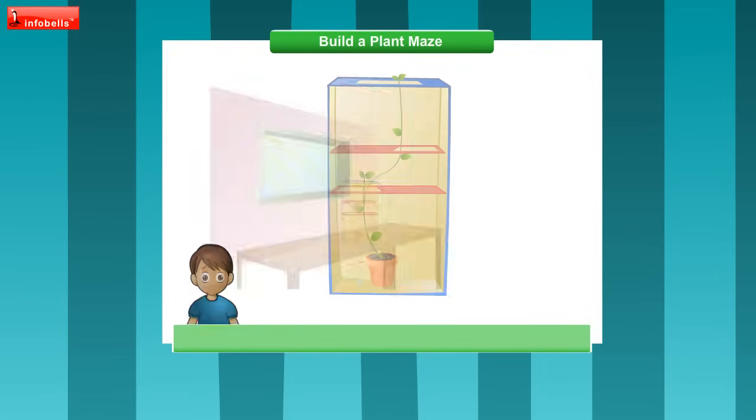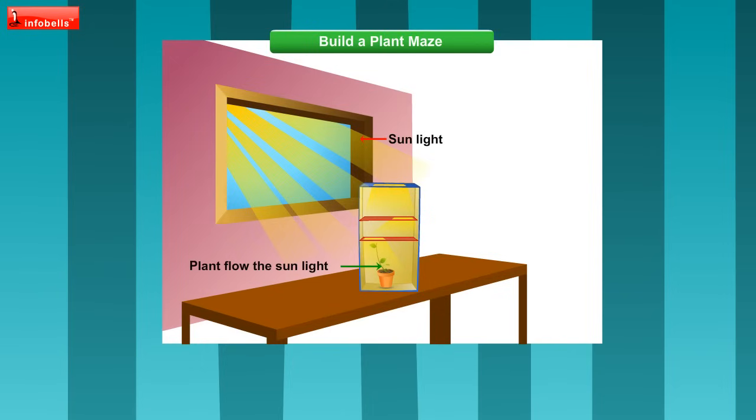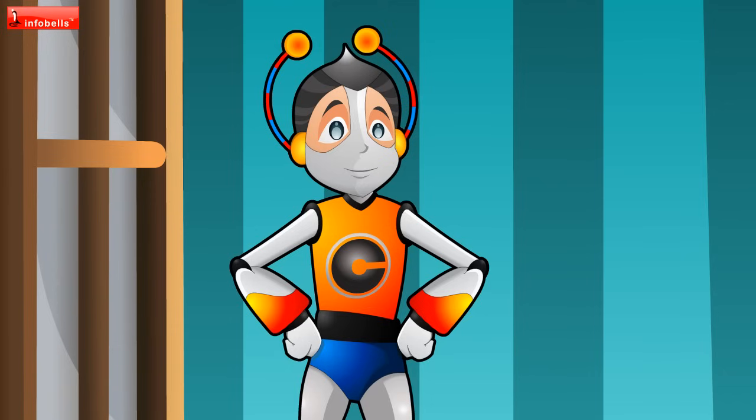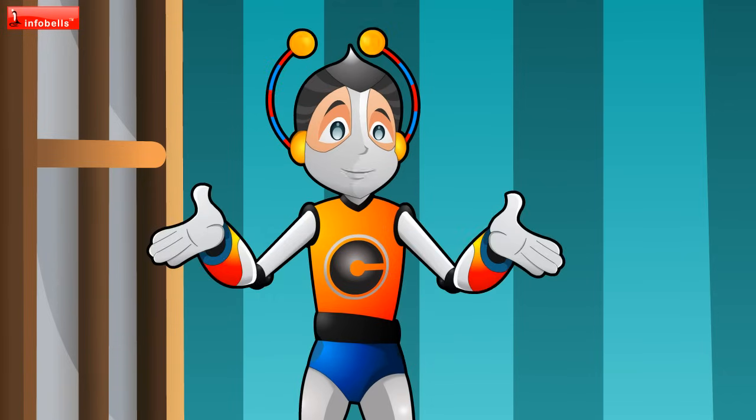How did this happen? The plant bends in order to get through all the windows and reach the light. This shows that sun is very essential for plants to grow.